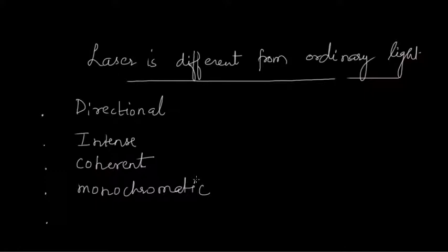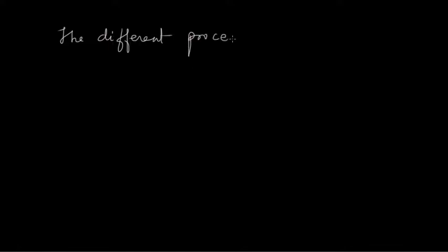These were the few properties of laser which make it different from ordinary light. Now, before understanding the basic principle of laser, we need to study the different processes occurring in the material when light is incident on it. These processes also occur in ordinary light. We will try to see these processes one by one and understand what extra is needed to make a laser.